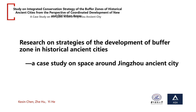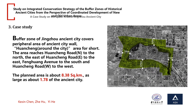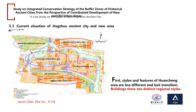Research on strategies for the development of the buffer zone in the historical ancient city — a case study on the space around the Jingzhou ancient city. The buffer zone of Jingzhou ancient city covers the peripheral area of the ancient city wall. The planned area is about 8.38 square kilometers, approximately 1.78 times the size of the ancient city itself.